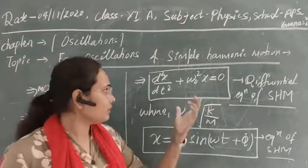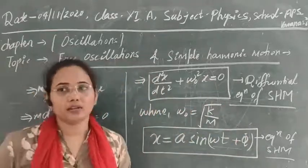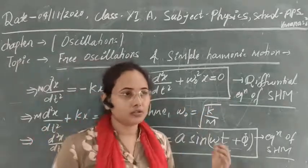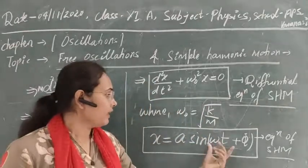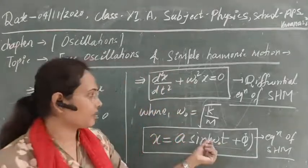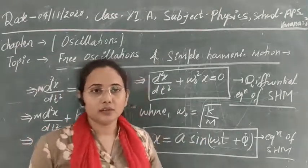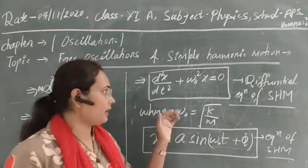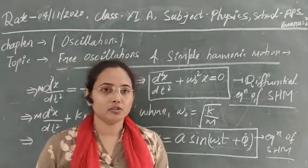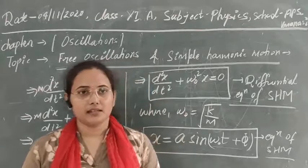I think everything about free oscillations and simple harmonic motion that I have explained here is clear to you — how we formulate this formula, which can be asked in examinations. The angular frequency ω₀ is constant in simple harmonic motion as there is no retarding force present. In the next class we will see the graphical representation of simple harmonic motion, and we will calculate the velocity, acceleration, and all other values. For today, let's end the class here. Thank you.